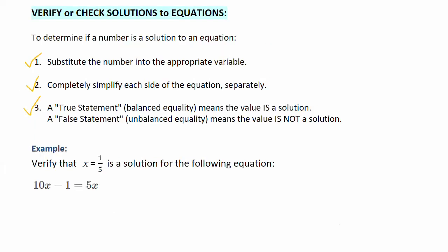Let's go ahead and verify that x equal to 1/5 is the solution for the equation we just solved. What I've done is rewritten the equation with a pair of parentheses in place of x. Plug in the number we're checking — that's 1/5 — and simplify each side of the equal sign independently.